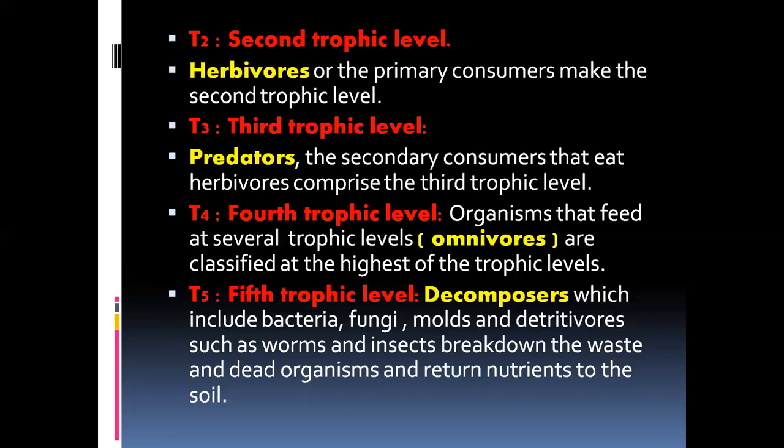T5, the fifth trophic level, consists of the decomposers of the ecosystem, which include bacteria, fungi, molds, and detritivores such as worms and insects. They break down waste and dead organisms and return nutrients back to the soil or environment. Detritivores are organisms that break down dead bodies and dead organic material, simplifying them and releasing nutrients back to the environment.